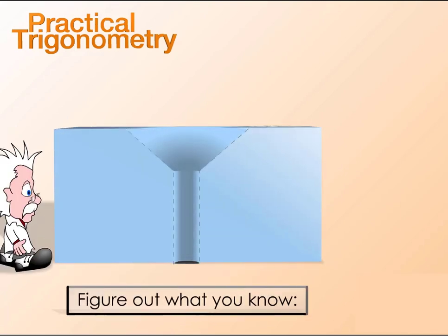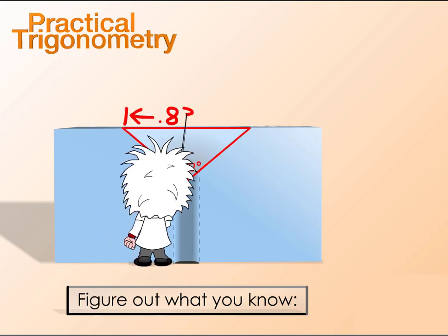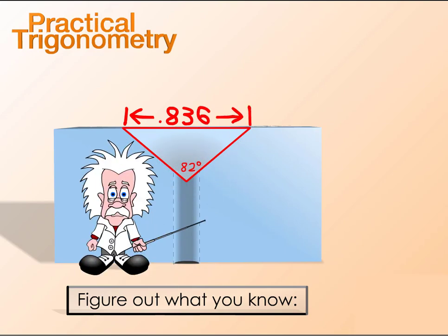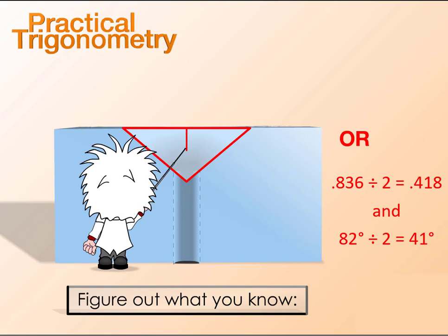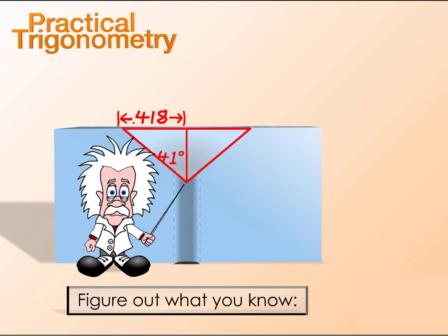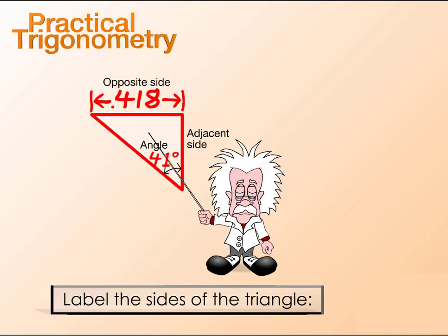Figure out what you know. Draw and mark a diagram as shown. Once you know your measurements, label the sides of the triangle according to the angle you are using.